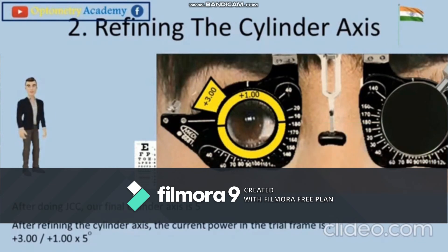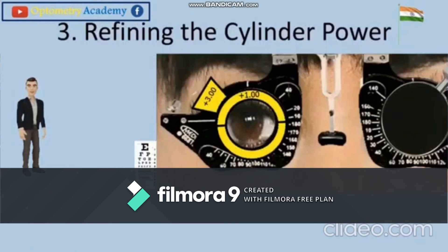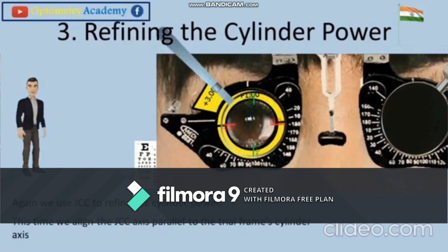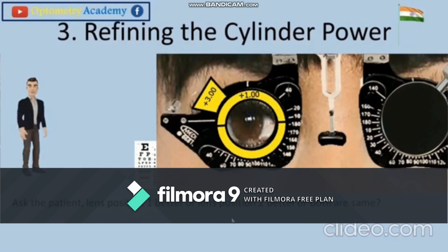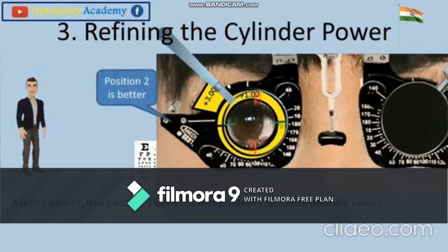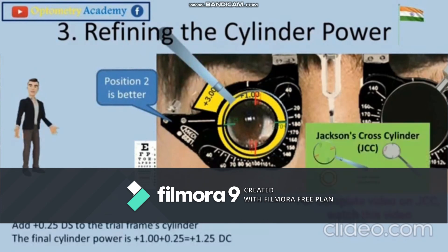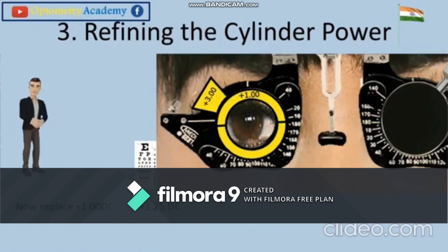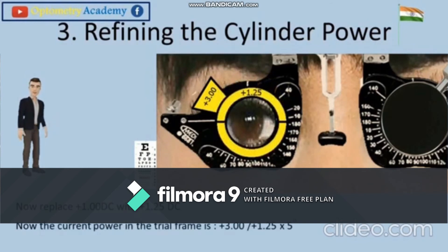To refine the cylindrical power, align the JCC axis parallel to the trial frame's cylinder axis. Ask the patient: is lens position one better, or lens position two, or are both the same? Then add plus 0.25 DS to the trial frame's cylinder; the final cylinder power is plus 1.00 plus 0.25 equals plus 1.25 DC. Replace the plus 1.00 DC with plus 1.25 DC. The current trial frame power is now plus 3.00 DS / plus 1.25 DC axis 5 degrees, and the patient's vision is now 6/6.